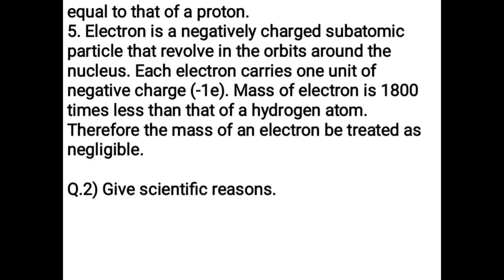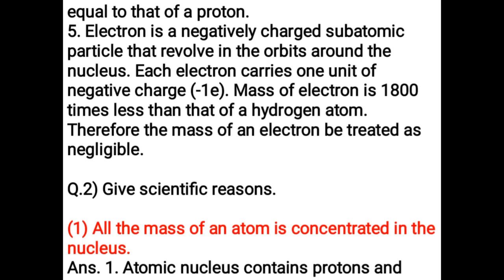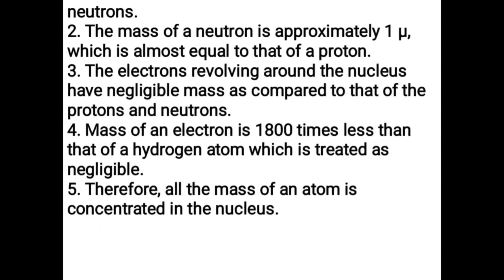Scientific reasoning: All the mass of an atom is concentrated in the nucleus. The atomic nucleus contains protons and neutrons. The mass of a neutron is approximately 1u, almost equal to that of a proton. The electrons revolving around the nucleus have negligible mass compared to protons and neutrons — the mass of an electron is 1800 times less than that of a hydrogen atom. Therefore, all the mass of an atom is concentrated in the nucleus.